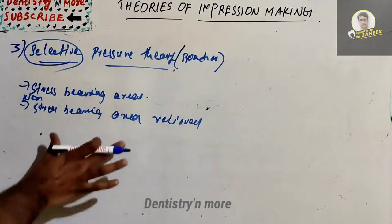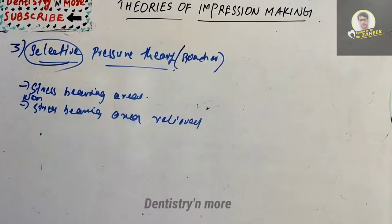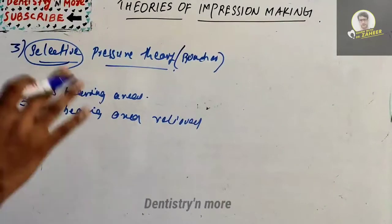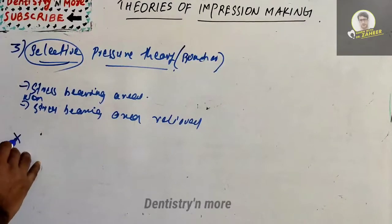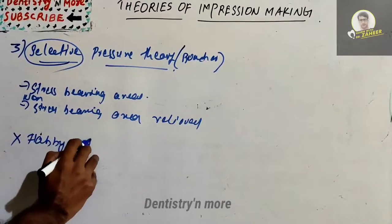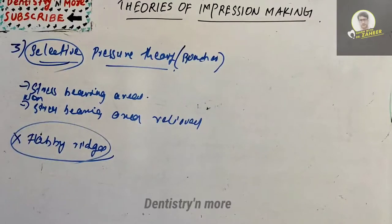In Boucher's selective pressure theory, non-stress-bearing areas are relieved and stress-bearing areas are allowed to come in contact with the tray. The main disadvantage is that it demands a firm, healthy mucosa covering over the ridge — it cannot be used in flabby ridges. A good, firm, healthy ridge is needed to apply this selective pressure theory.